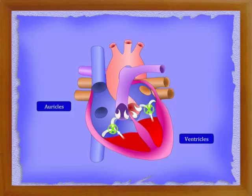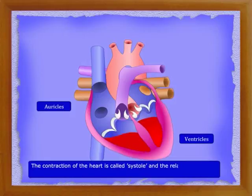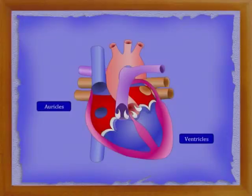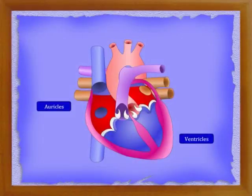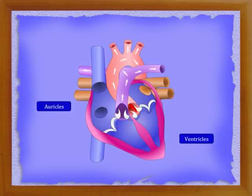The backward flow of blood is prevented by these valves. The contraction of the heart is called systole, and the relaxation of the heart after contraction is called diastole. The two oracles of the heart contract together when blood from oracles is pumped into ventricles. Next, the two ventricles contract together, pumping out the blood to various parts of the body from the heart.